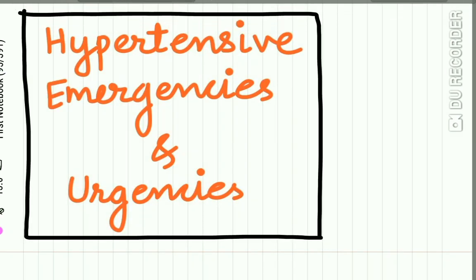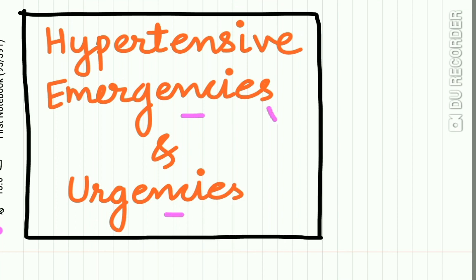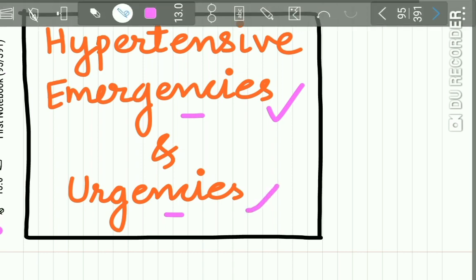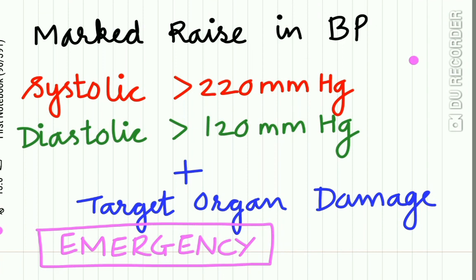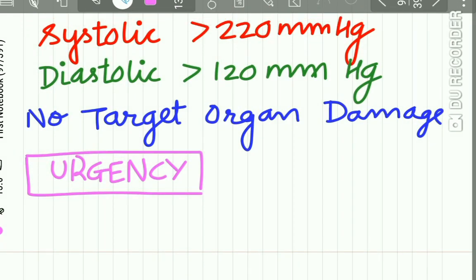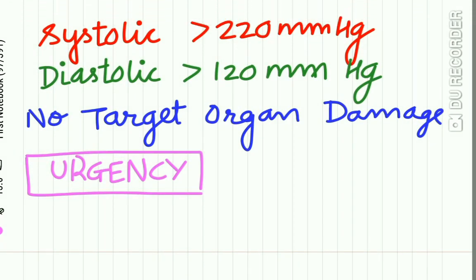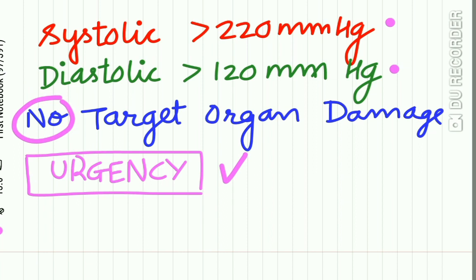Now, what is the treatment of hypertensive emergencies and urgencies? A hypertensive emergency is when systolic BP is more than 220 mmHg and diastolic BP is more than 120 mmHg with target organ damage. A hypertensive urgency is when systolic BP is more than 220 mmHg and diastolic BP is more than 120 mmHg with no target organ damage. In urgency, BP can be lowered within a few hours, but in emergency conditions it must be lowered within minutes.